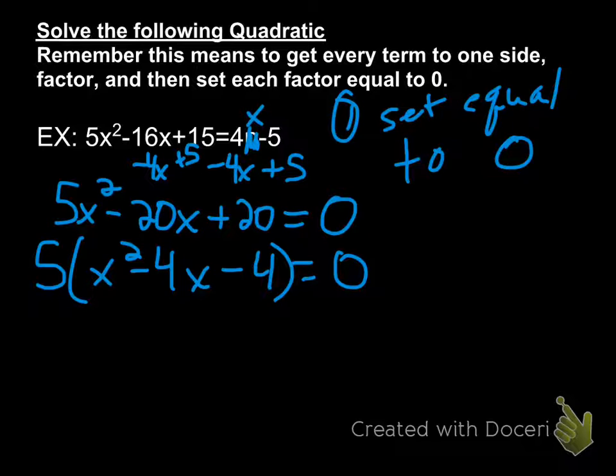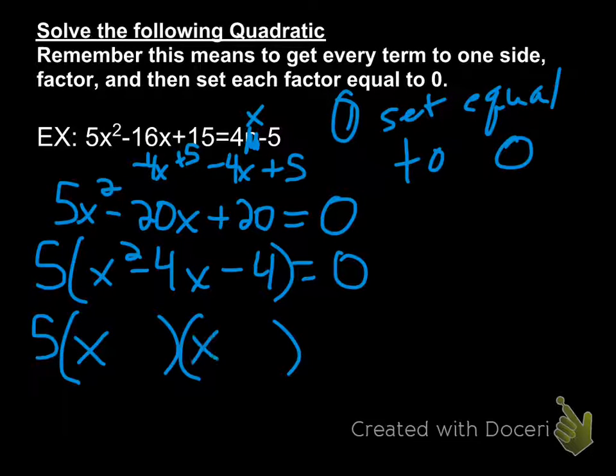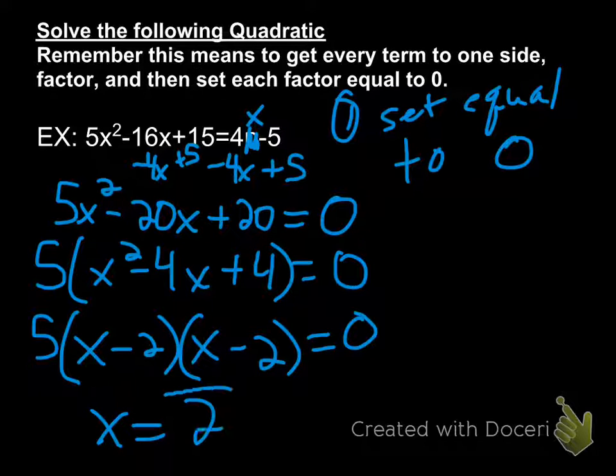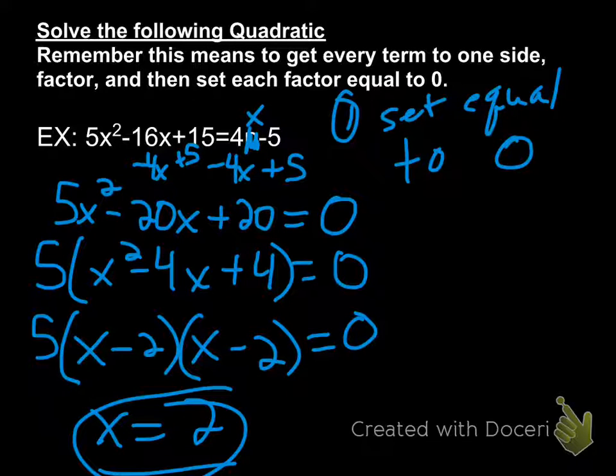So now the question is, can I factor whatever is left? Yeah. I think I've got 5 times x. I know my leading coefficients are 1 and 1. So this is 5 times x minus 2 times x minus 2 equals 0. So how many solutions will this one have? What can I put in for x that'll give me 0? 2, right? So my only solution on this one is x equals 2.